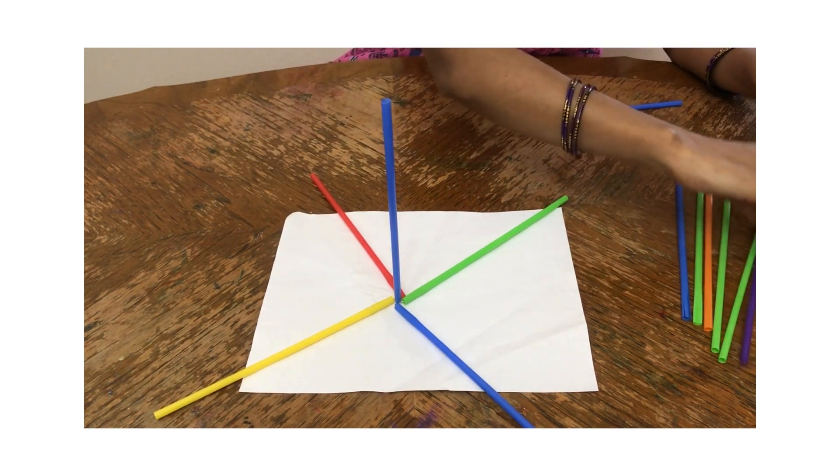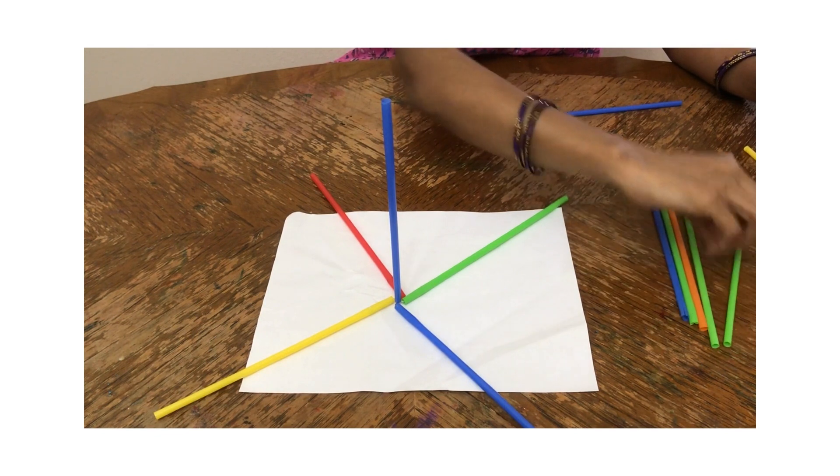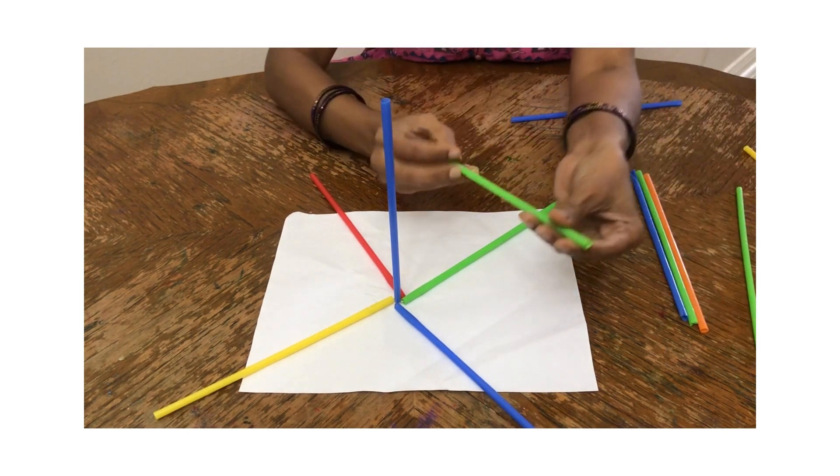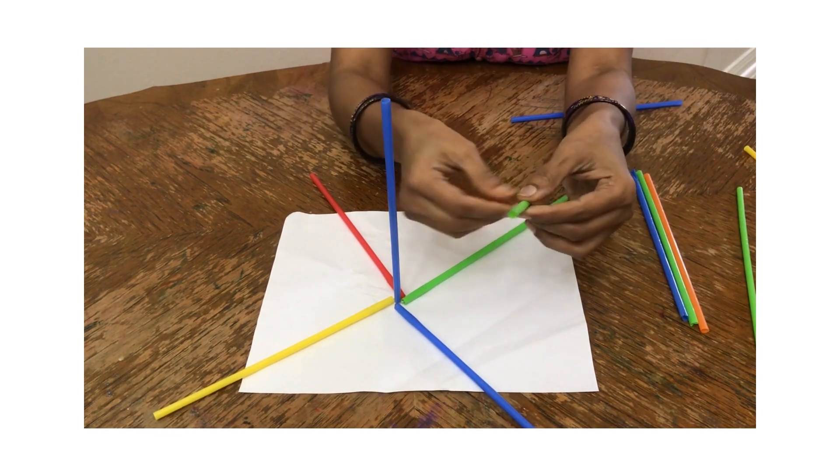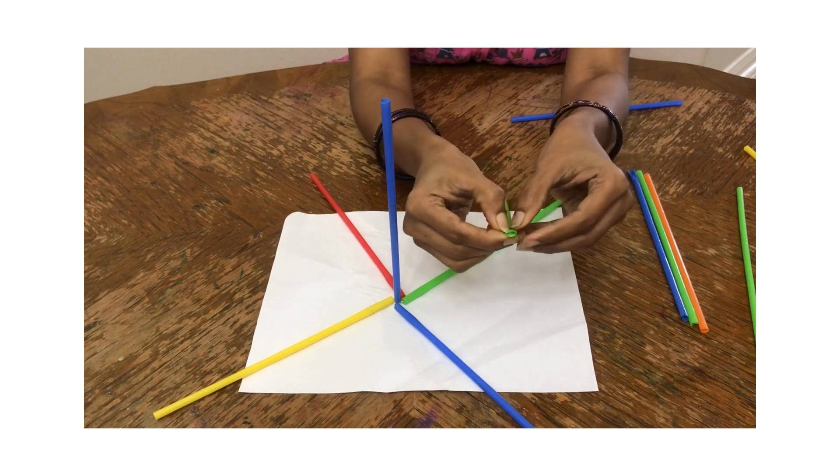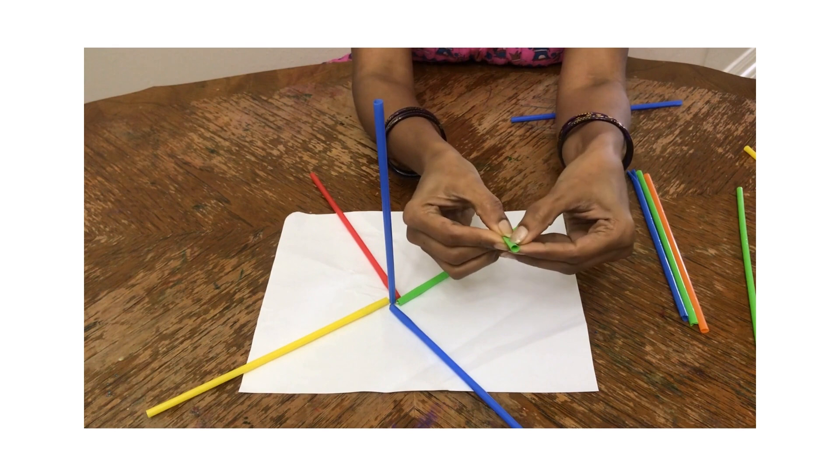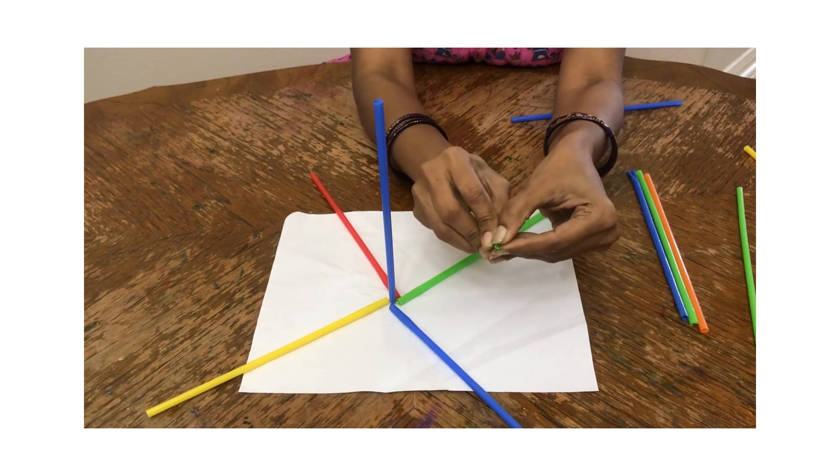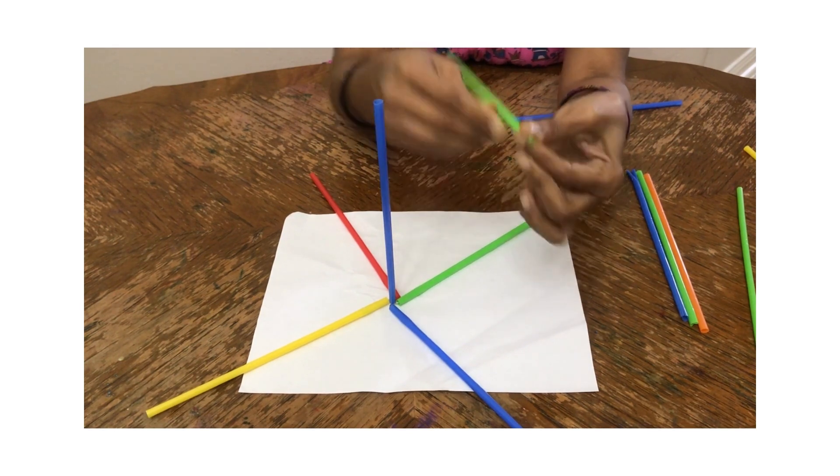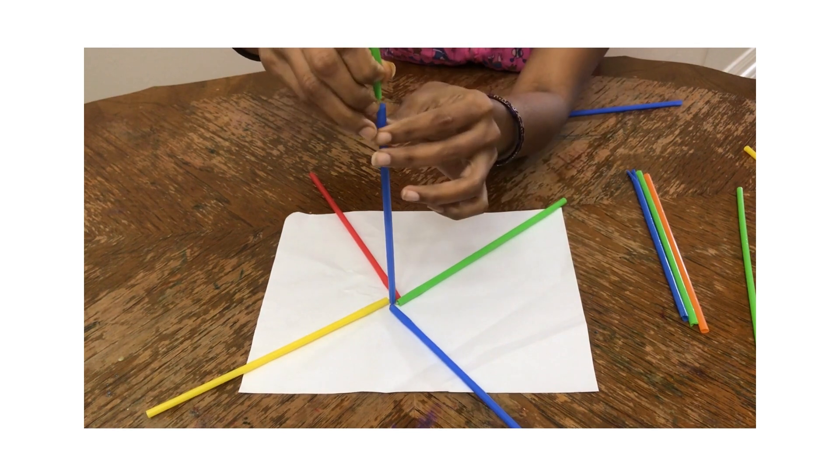Now we can add as many straws as we like. So for adding the straws, you have to pinch on one side flat and make it smaller. Pinch like that, two times, and then put it in the straw.